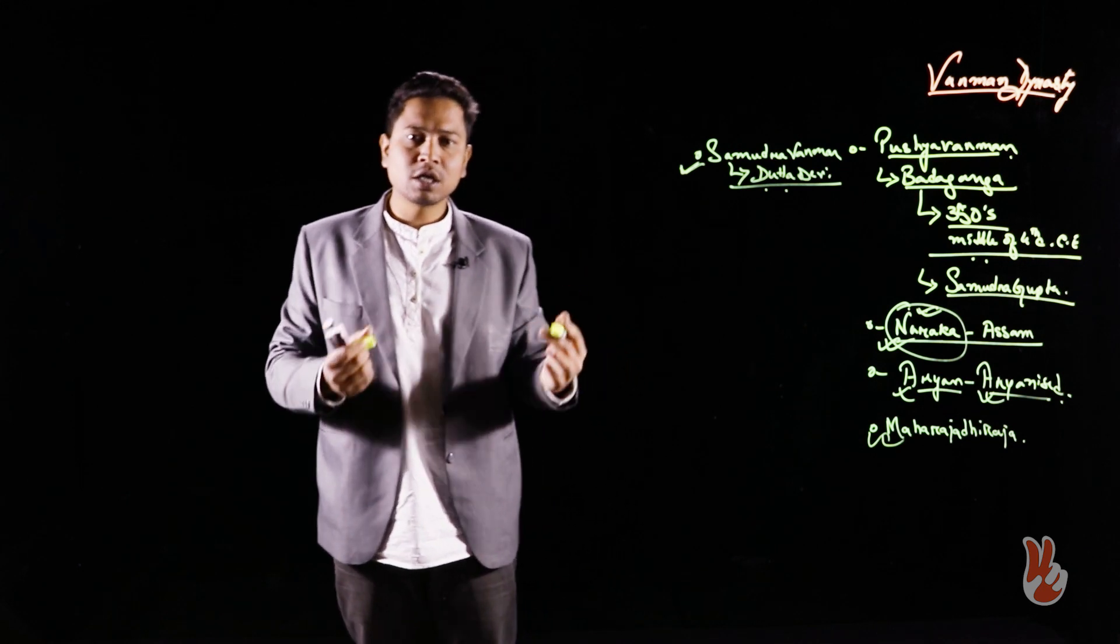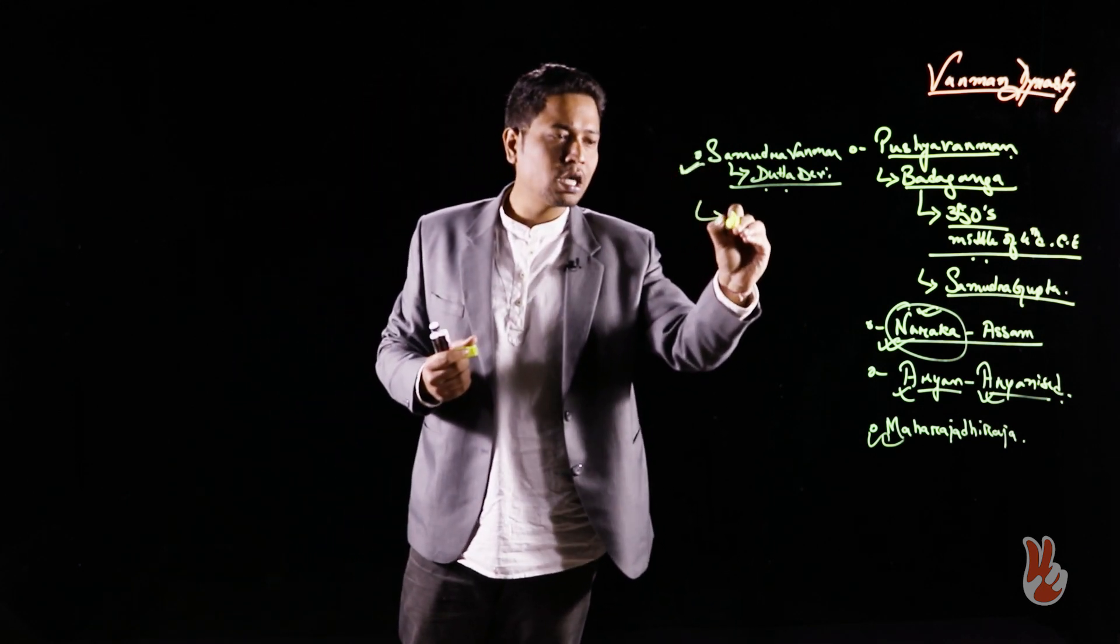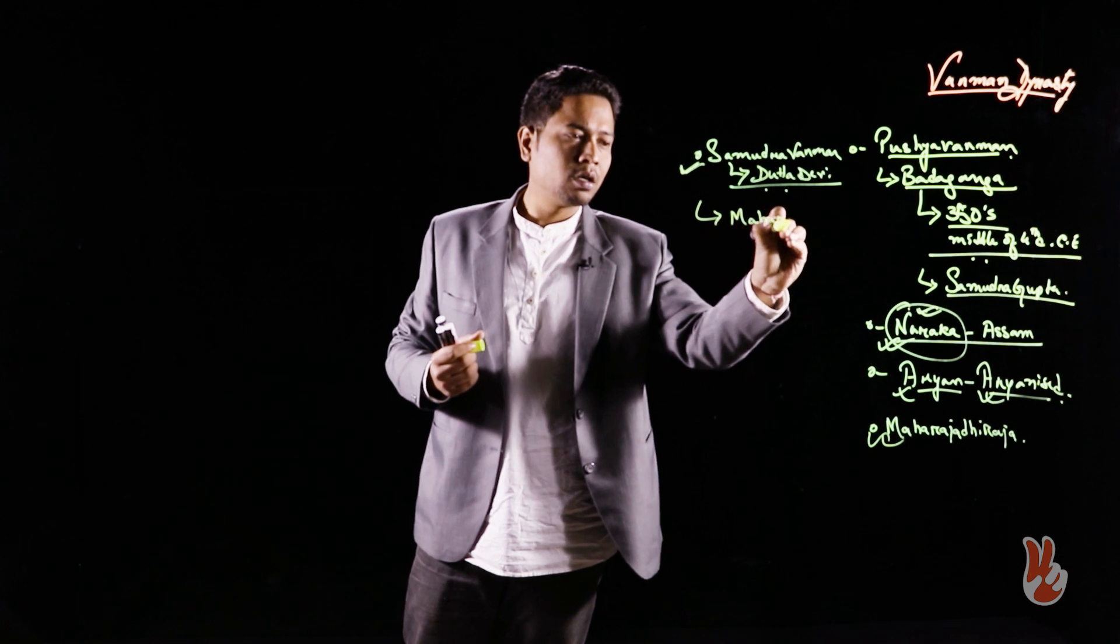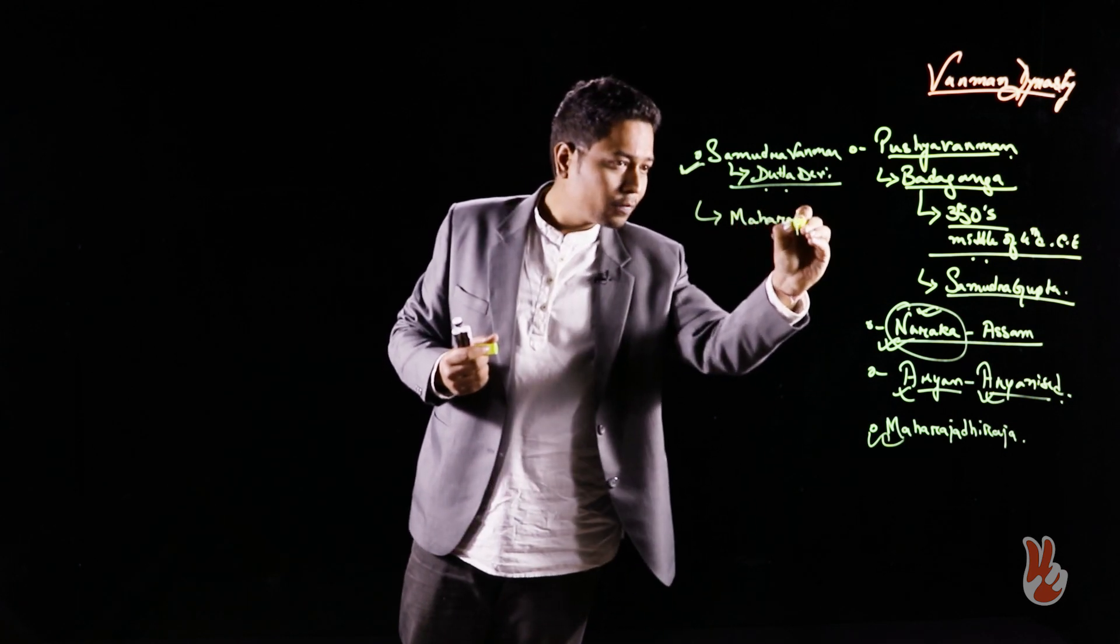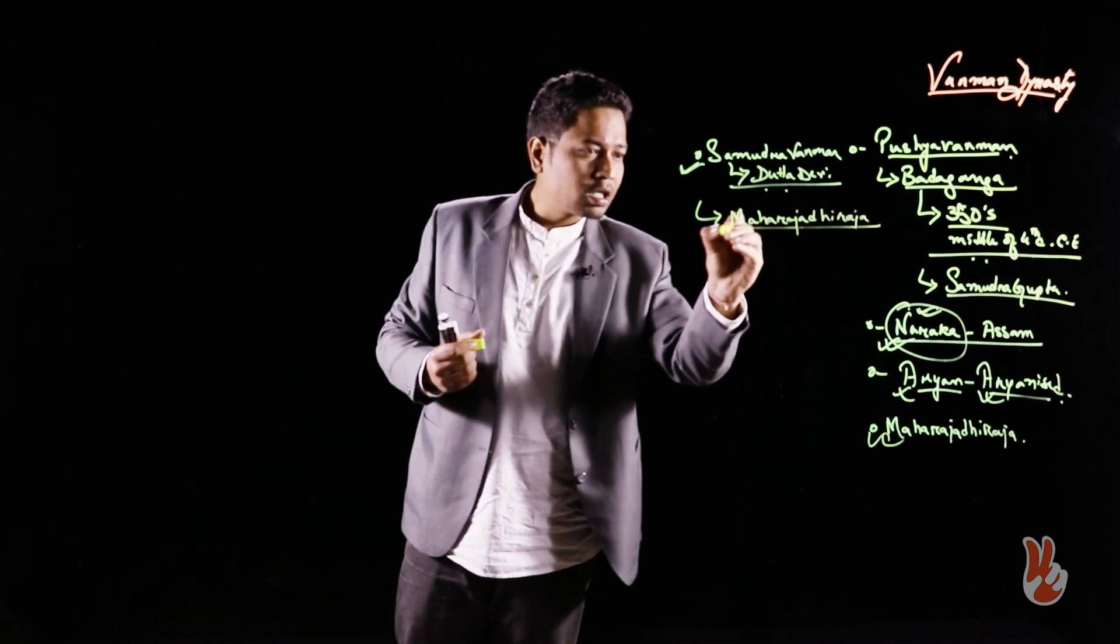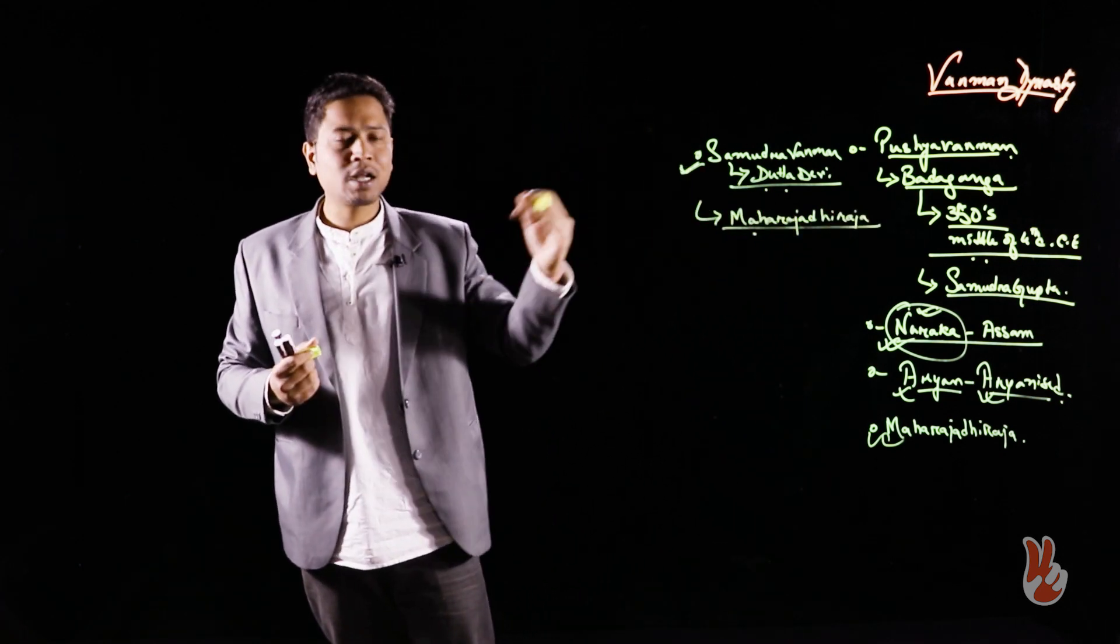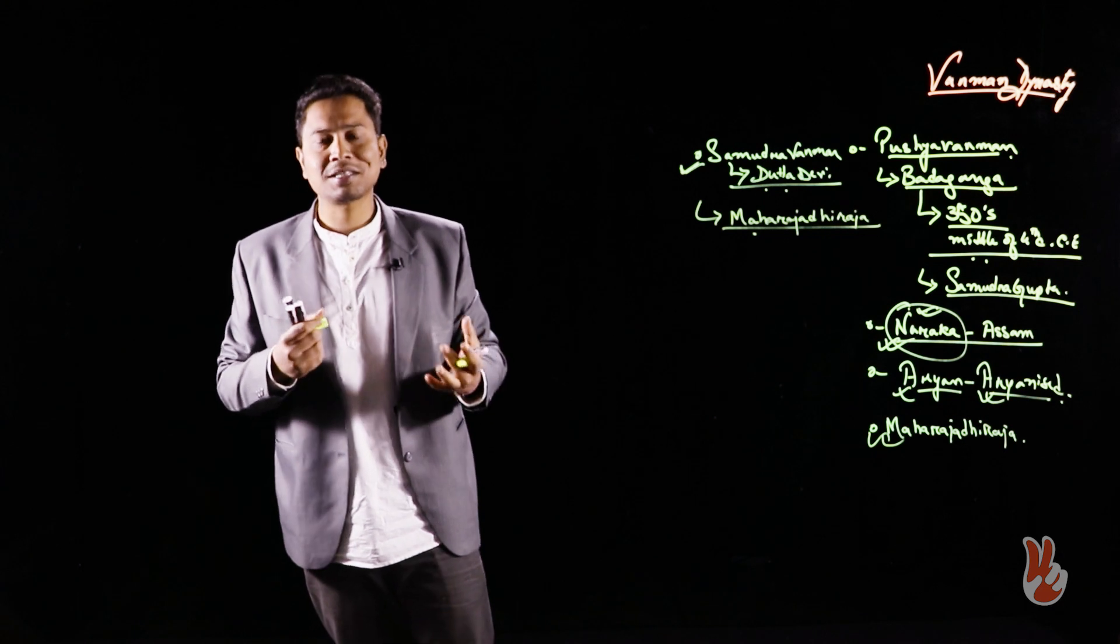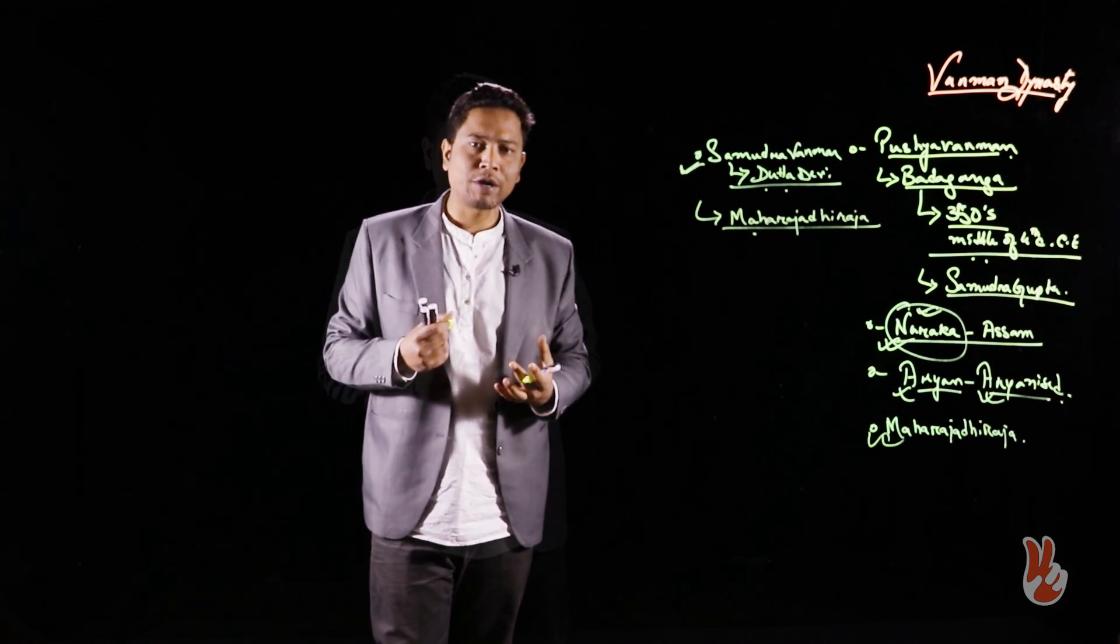His son, Samudra Varman, also took the title of Maharajadhiraja, and this again suggests the independence of the Varman dynasty.